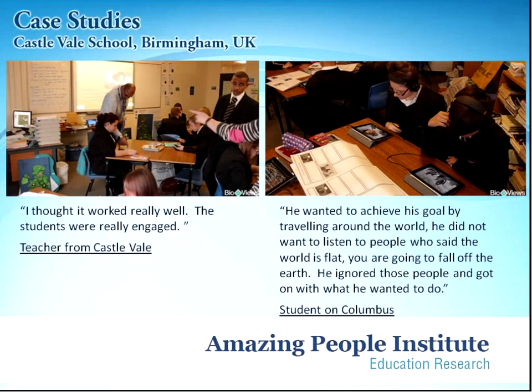At Castlevale School in Birmingham, UK, the school adopted an Amazing People ethos where students decorated the walls with posters of amazing people, affirmations and quotes. One teacher said: 'We picked amazing people who have had a lot of obstacles to success — they may have had a bad upbringing or a poor education — and we focus on the successes and achievements they had despite their adversity. We change them every two or three weeks so that students can see, despite what your background is and the obstacles you have in life, it is possible to succeed.' As one student reflected on Christopher Columbus: he wanted to achieve his goal and did not want to listen to people who said the world is flat, so he ignored those people and went on with what he wanted to do.